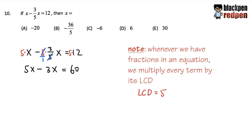And then we'll just continue the usual way. Here we have the 5x minus 3x. We can combine these two terms right away. 5x minus 3x, that's 2x. And then this is equal to 60.